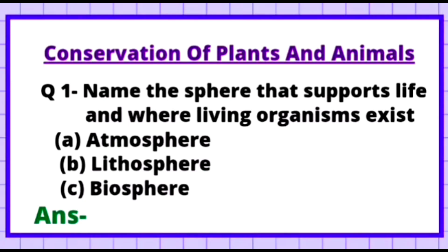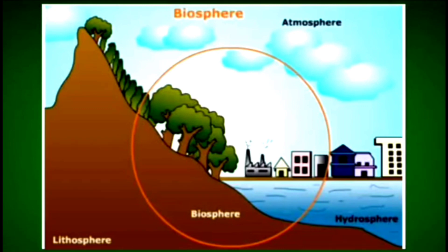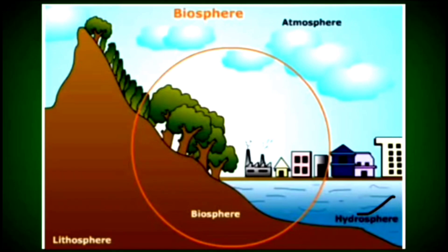Question 1: Name the sphere that supports life and where living organisms exist. Option A: Atmosphere, Option B: Lithosphere, Option C: Biosphere. The correct answer is Option C — Biosphere. The airy part is the atmosphere, the land part is the lithosphere, and the water part is the hydrosphere. The common part where all three overlap, where plants and animals can survive, is called the Biosphere.